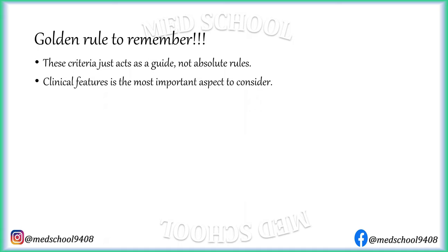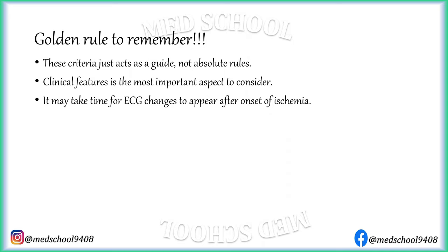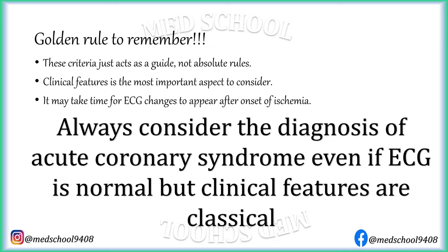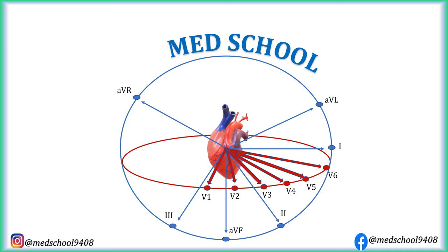It may take time for ECG changes to appear after onset of ischemia. The golden rule to remember is: always consider the diagnosis of Acute Coronary Syndrome even if the ECG is normal, but clinical features are classical. With this, we conclude this video. The next video will be about unstable angina and NSTEMI. Thank you for watching. If you have any queries or suggestions, please write them in the comment section. If you like the video, please like and share it, and subscribe to the channel.